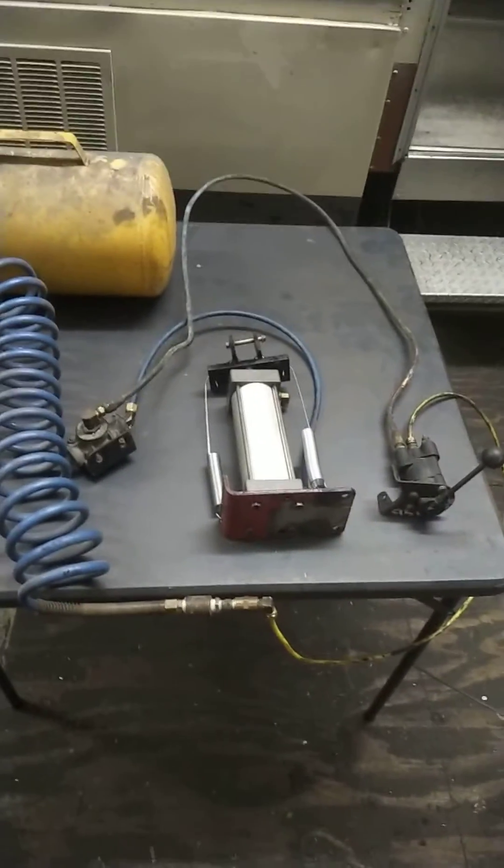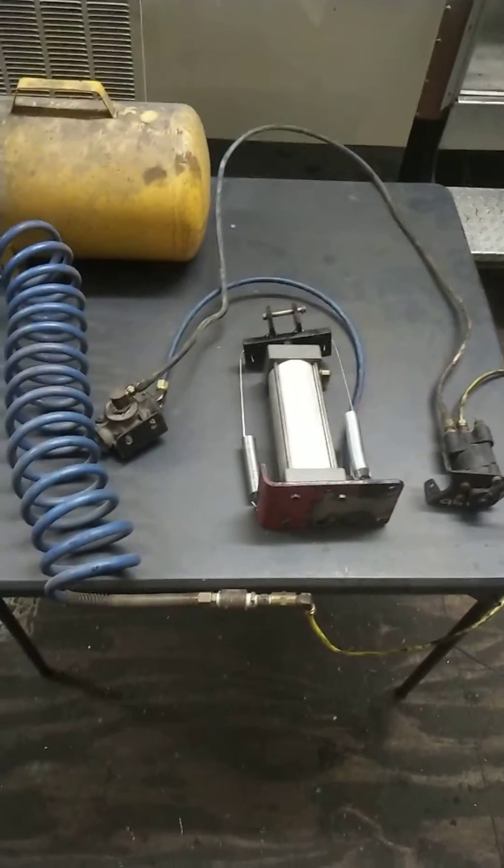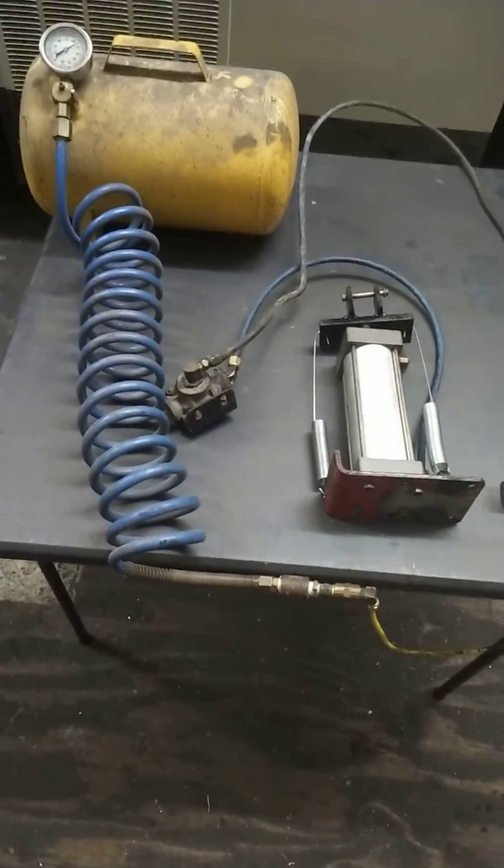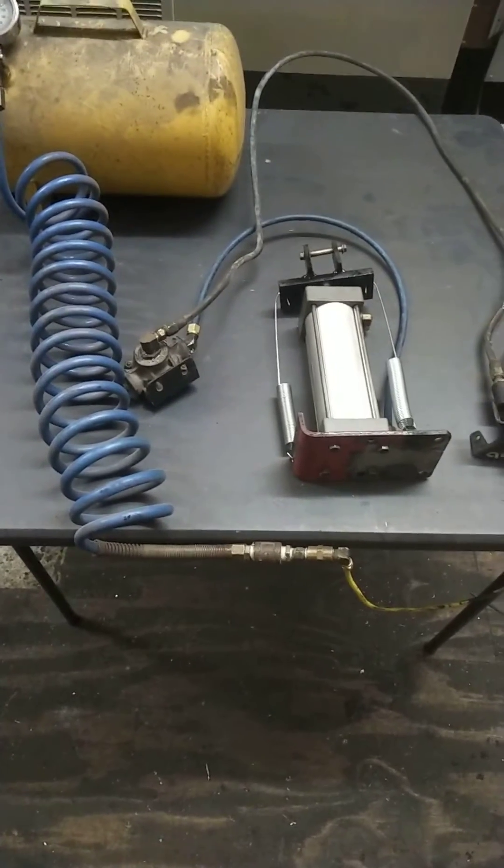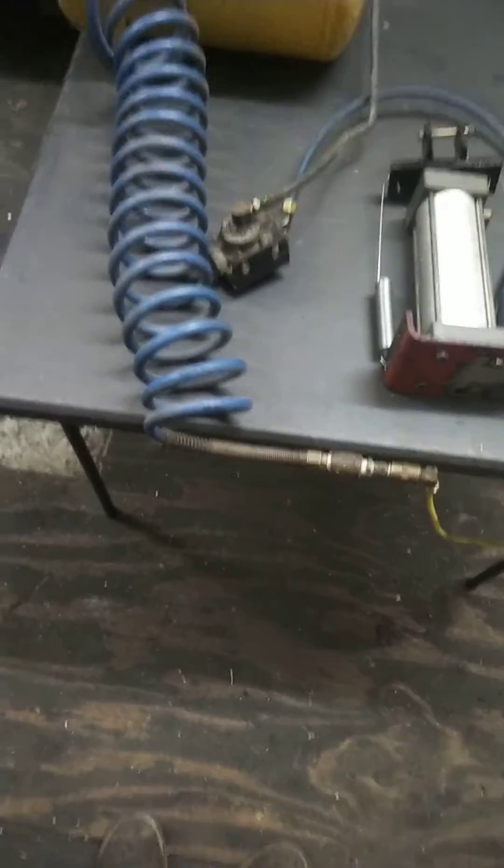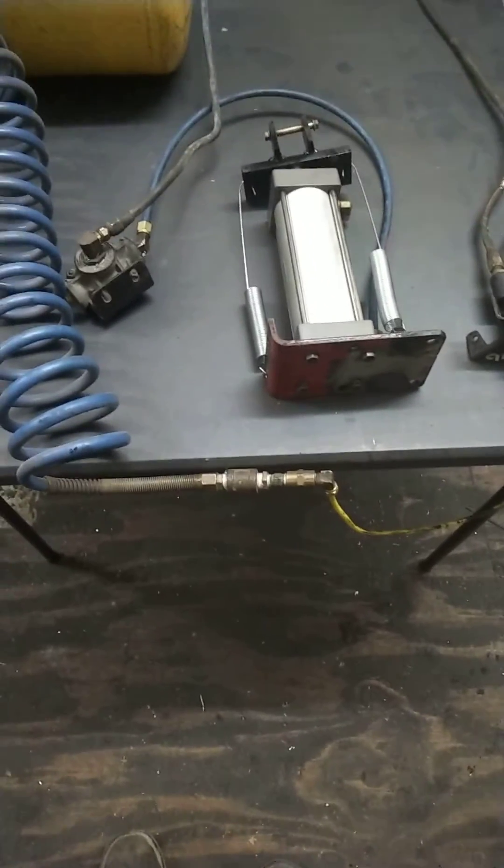This is my homemade air-operated clutch assembly. I could run a linkage but it kind of gets in the way. I've left that option open but I thought I'd try this first because it's easier to run a 3/8 airline back to the clutch from the dash than it is to run a linkage.